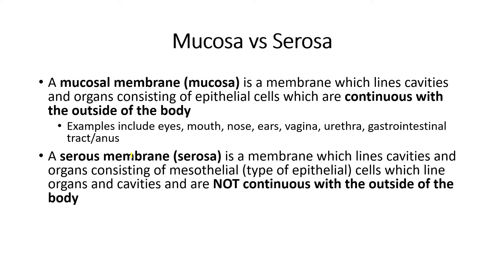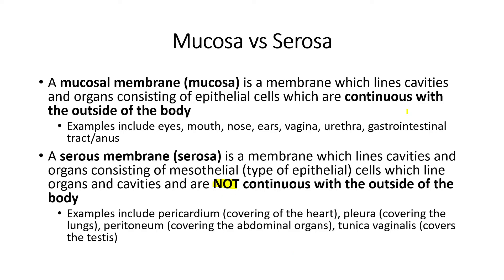A serous membrane, or serosa, is a membrane which is also made up of epithelial cells — specifically a type called a mesothelial cell — which lines organs and cavities that are not continuous with the outside of the body. Examples include the pericardium, the pleura, peritoneum, and the tunica vaginalis. The pericardium covers the heart, the pleura lines the lungs, the peritoneum covers abdominal organs, and the tunica vaginalis covers the testes.